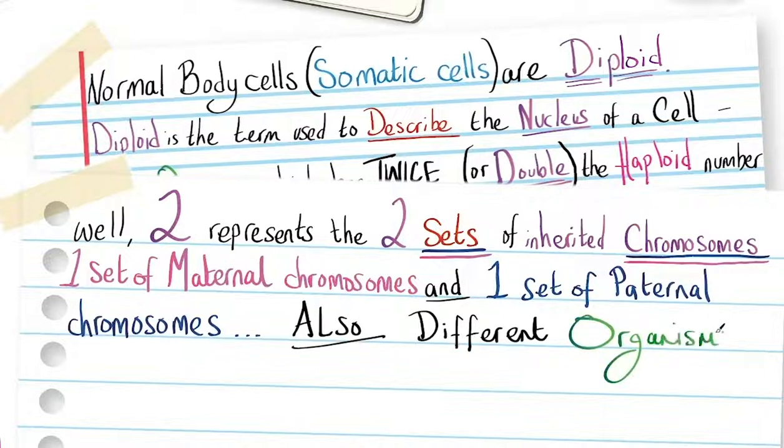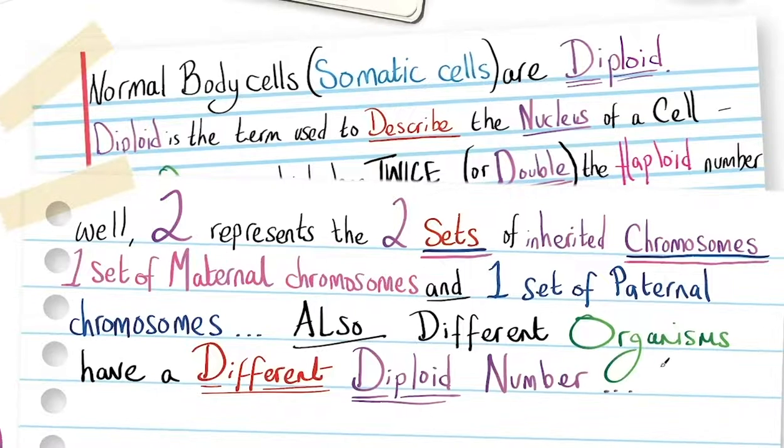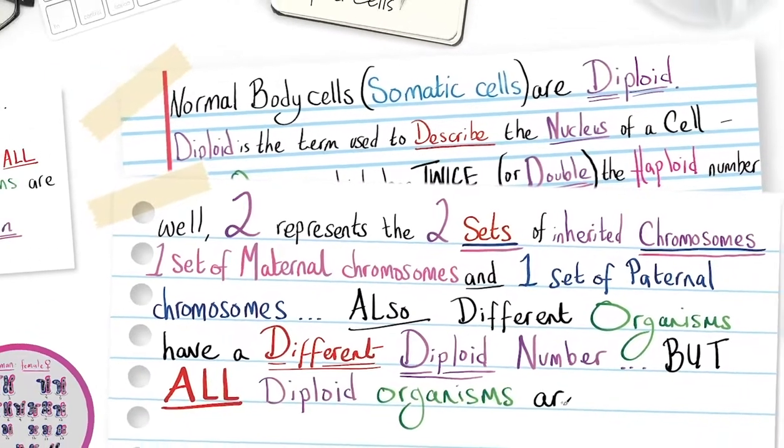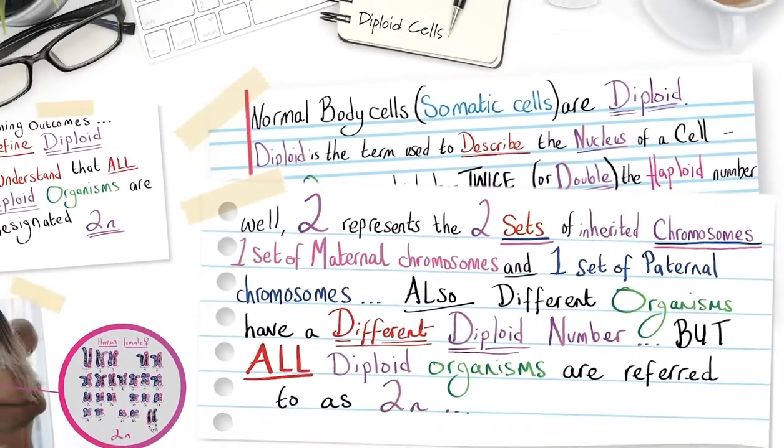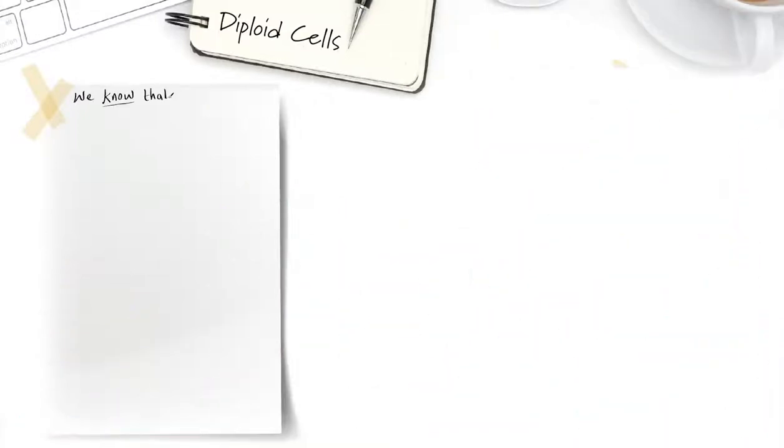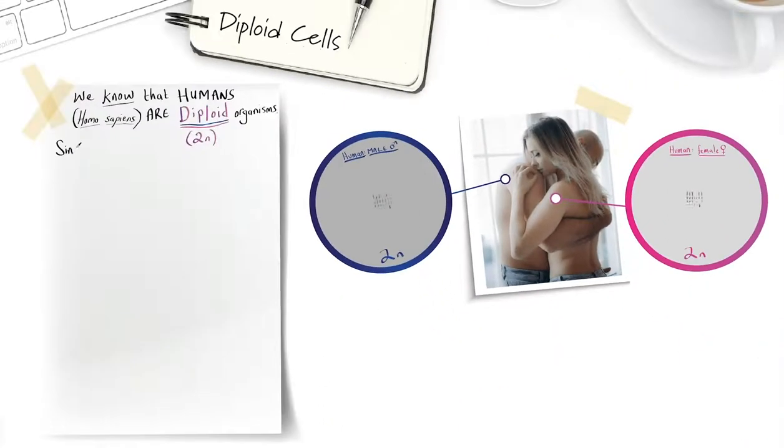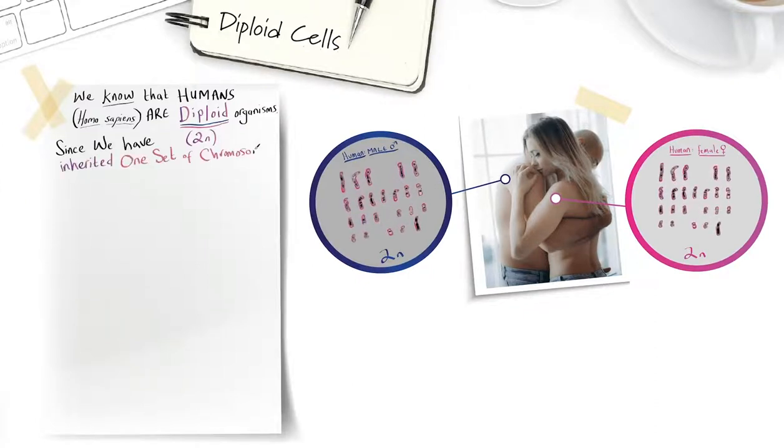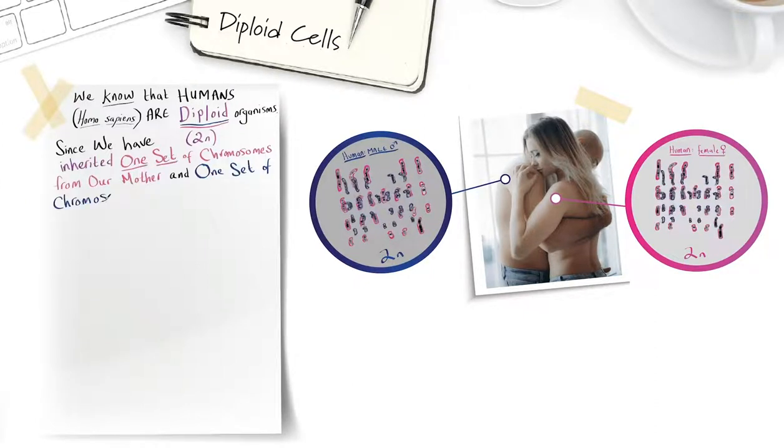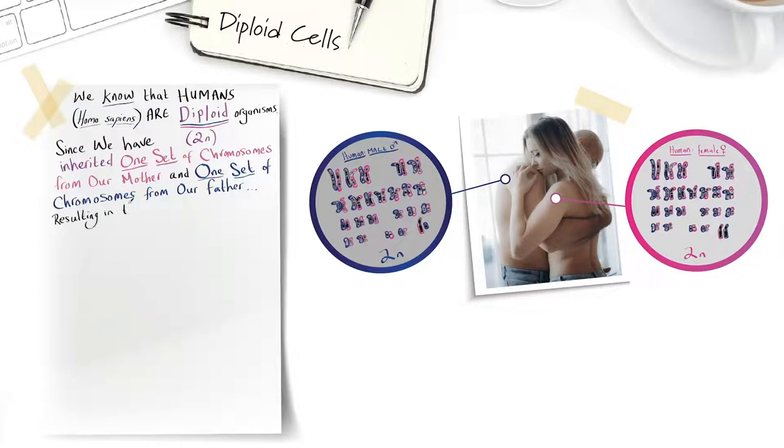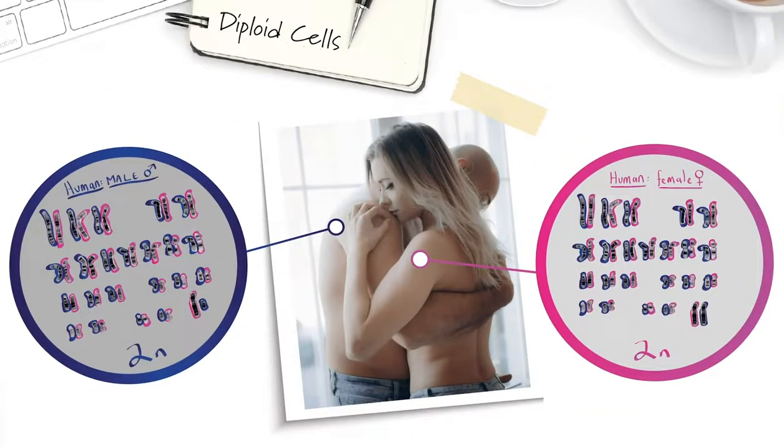Different organisms have a different diploid number, but all diploid organisms are referred to as 2n. For example, we know that humans, Homo sapiens, are diploid organisms since we have inherited one set of chromosomes from our mother and one set from our father, resulting in homologous pairs of chromosomes.